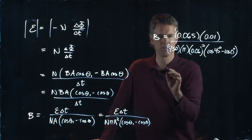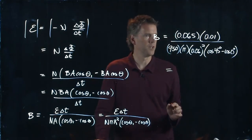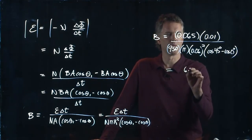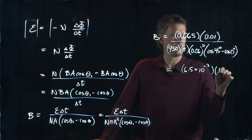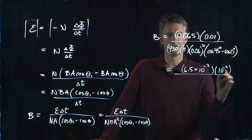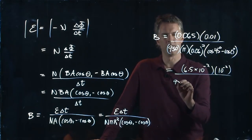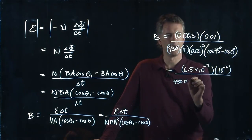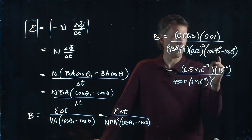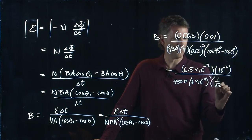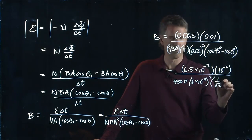Theta 1 which we said was 45 degrees, theta was 0 degrees. If somebody punches this stuff into your calculator, tell me what you get. So we've got 6.5 times 10 to the minus 2, we've got another 10 to the minus 2 right there, we've got 950, we've got a pi, we've got 6 times 10 to the minus 2 squared, cosine of 45 is 1 over root 2, cosine of 0 is what?